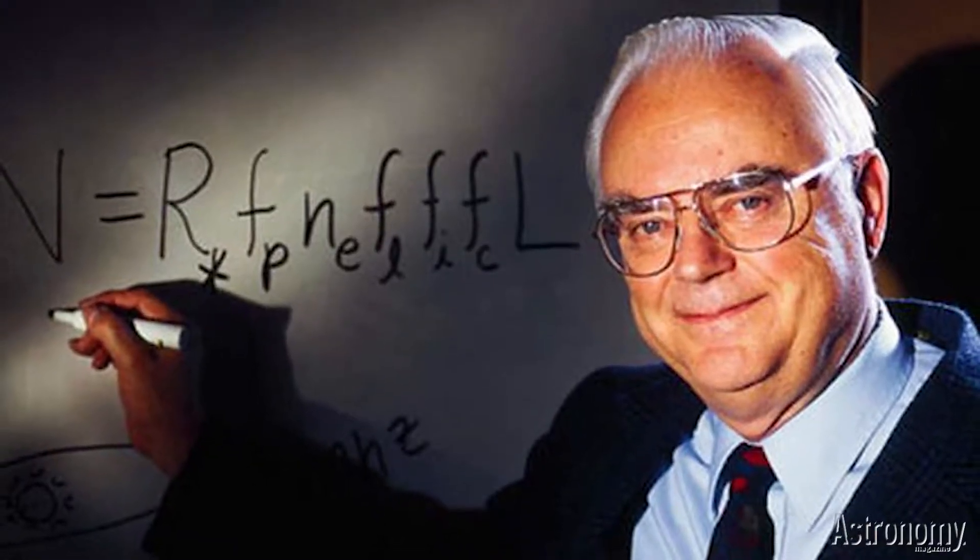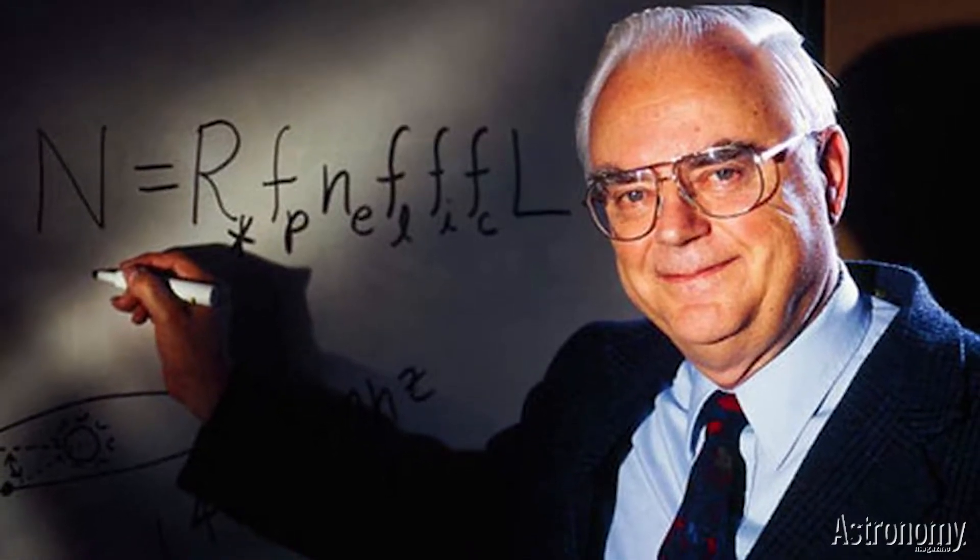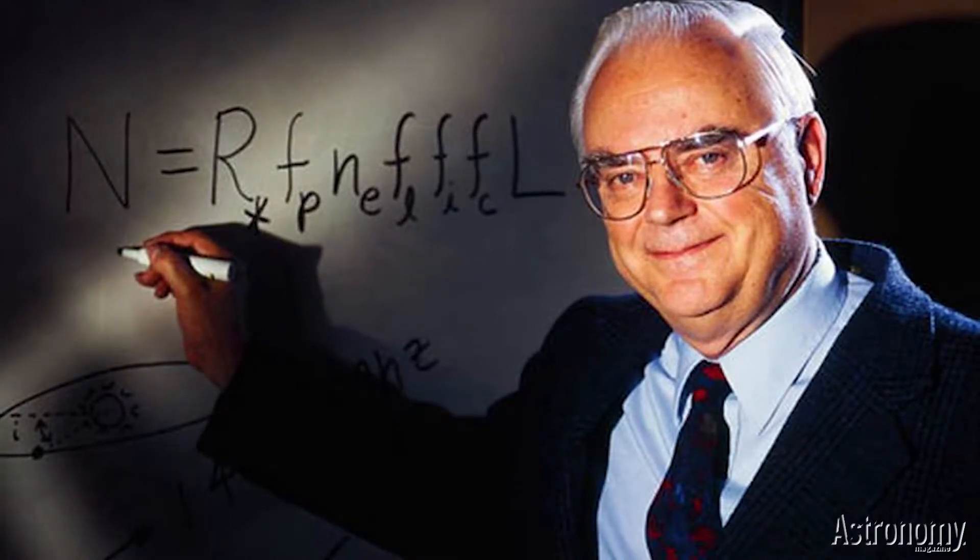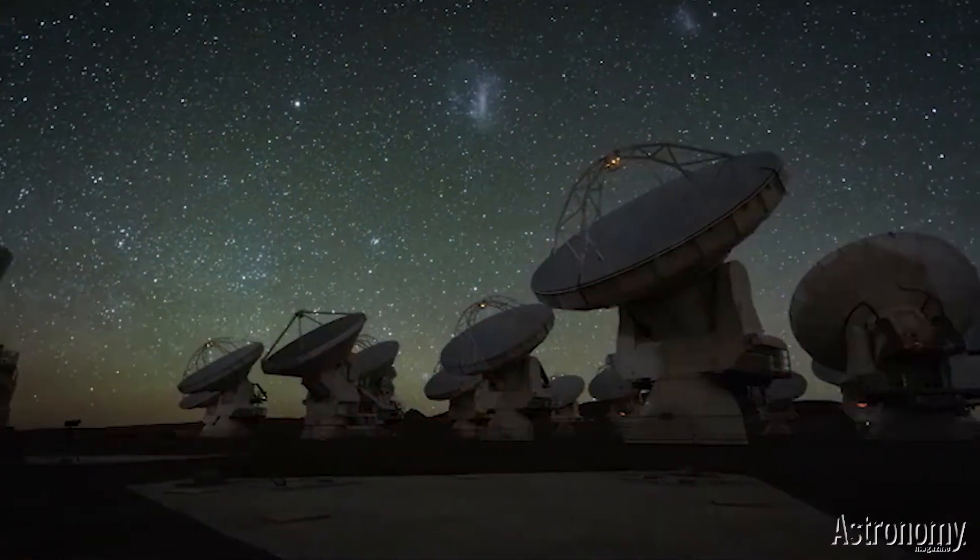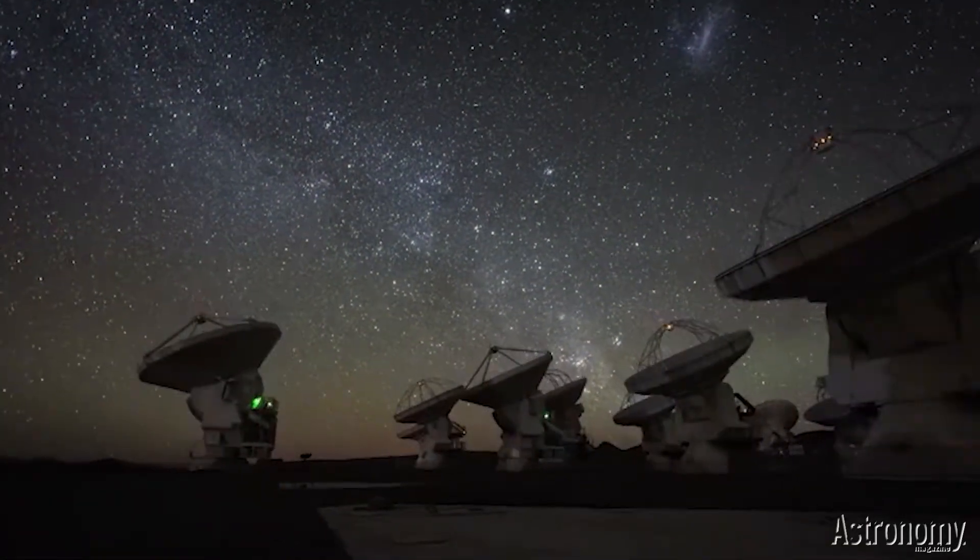In 1961, Frank Drake of Cornell University produced an equation to estimate civilizations in our galaxy at a conference in Green Bank, West Virginia. The so-called Drake equation specifies the number of civilizations now transmitting an electromagnetic signal.